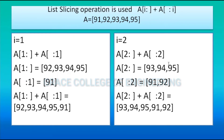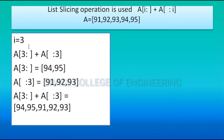Then a[:2] means starting from index 0 up to but not including index 2, so [91, 92]. Concatenating: [93, 94, 95] + [91, 92] = [93, 94, 95, 91, 92]. For i = 3, because we have n = 3, the formula is a[3:] + a[:3].